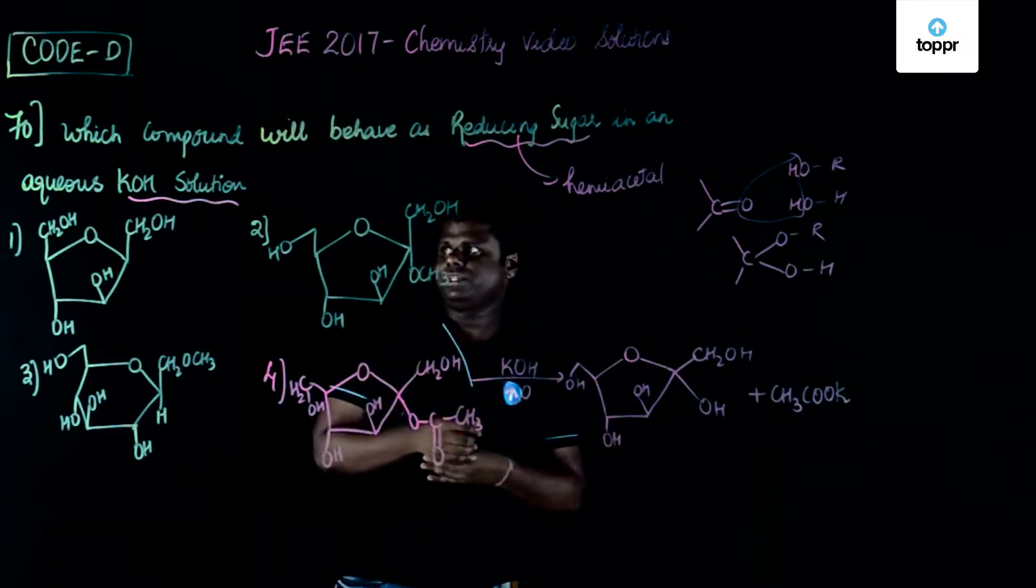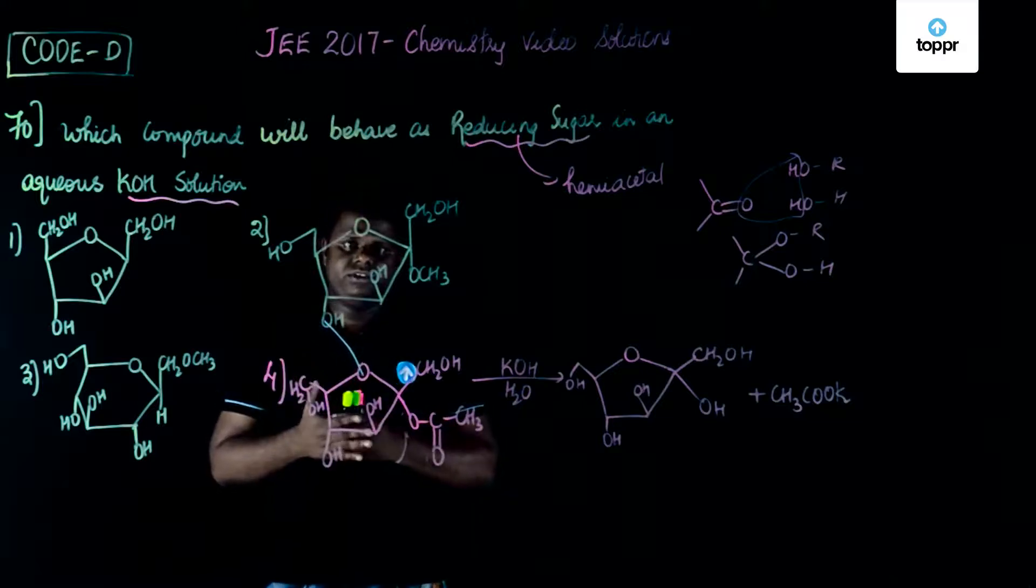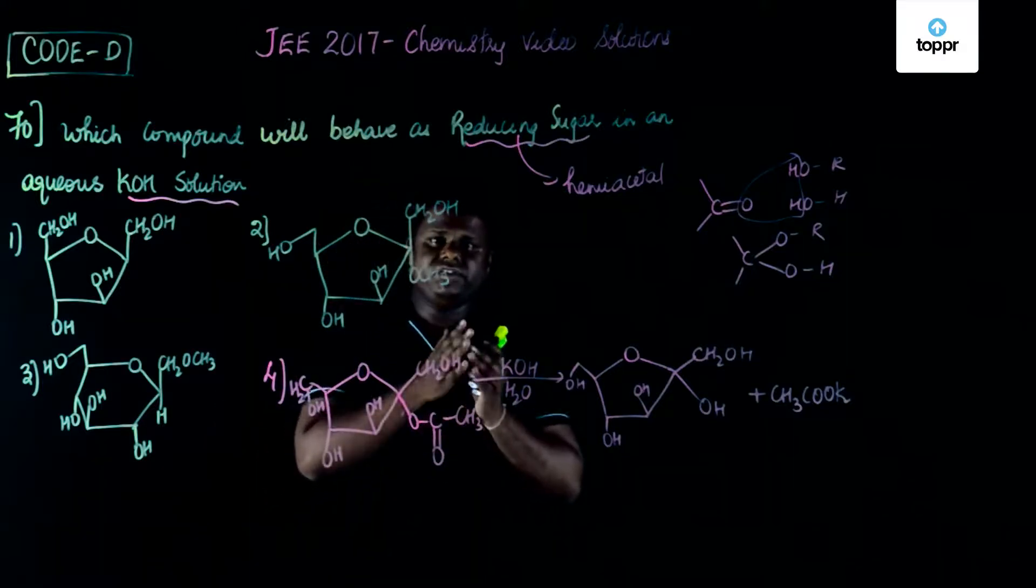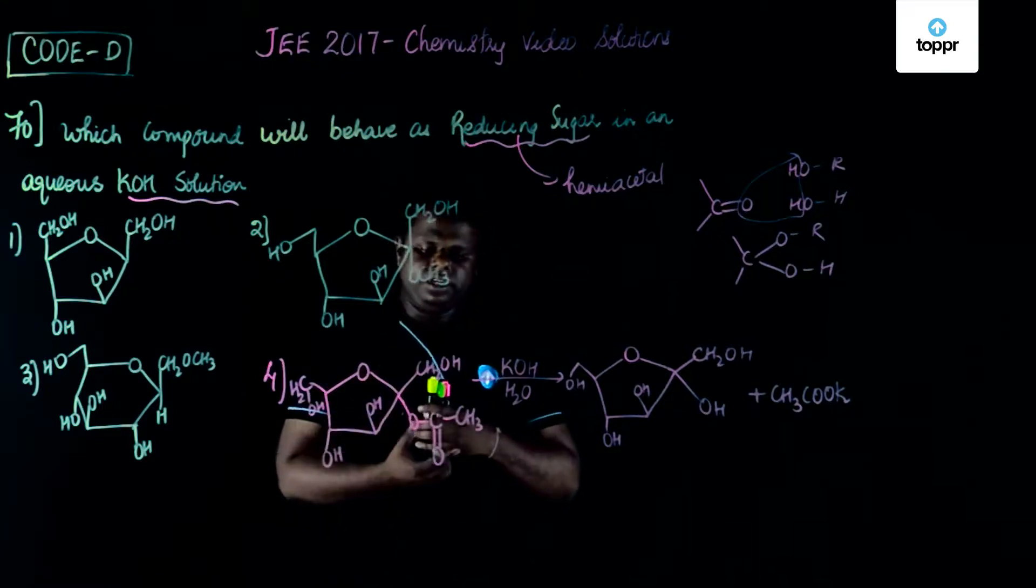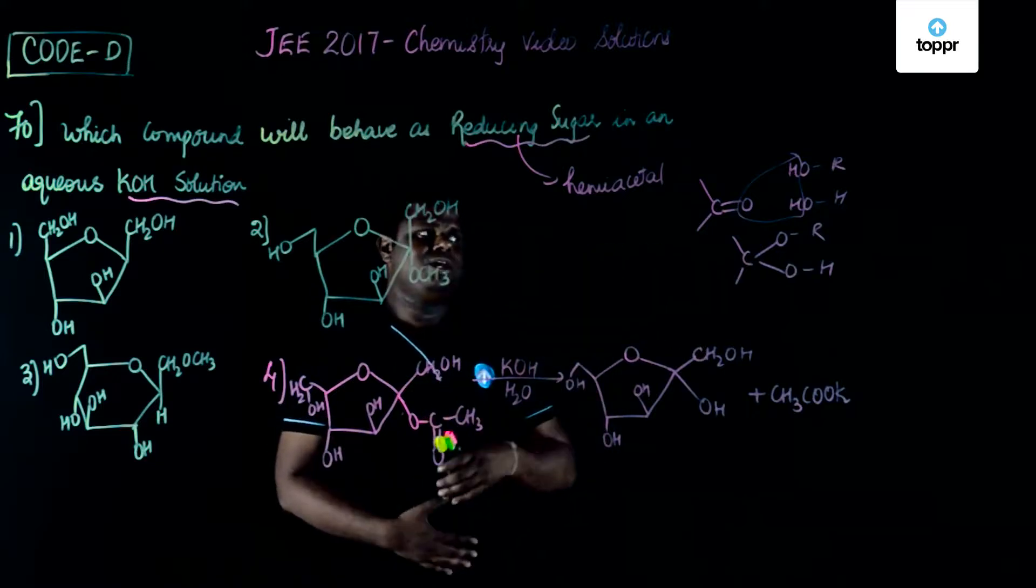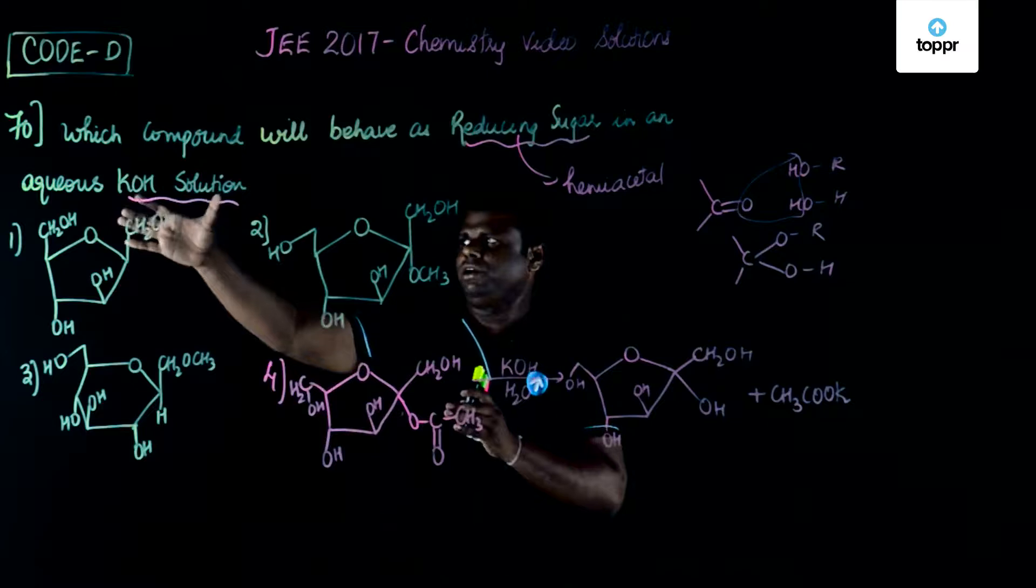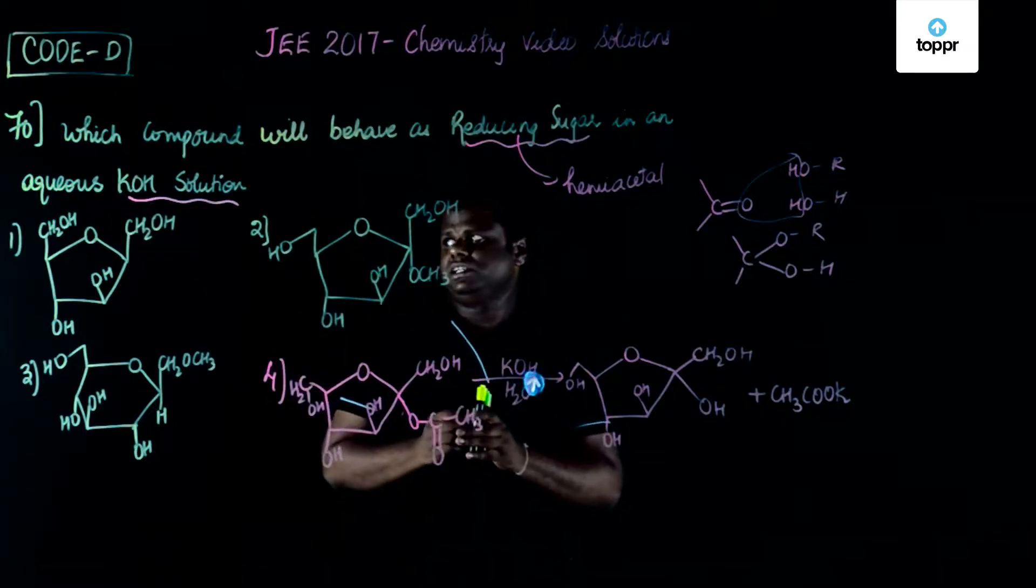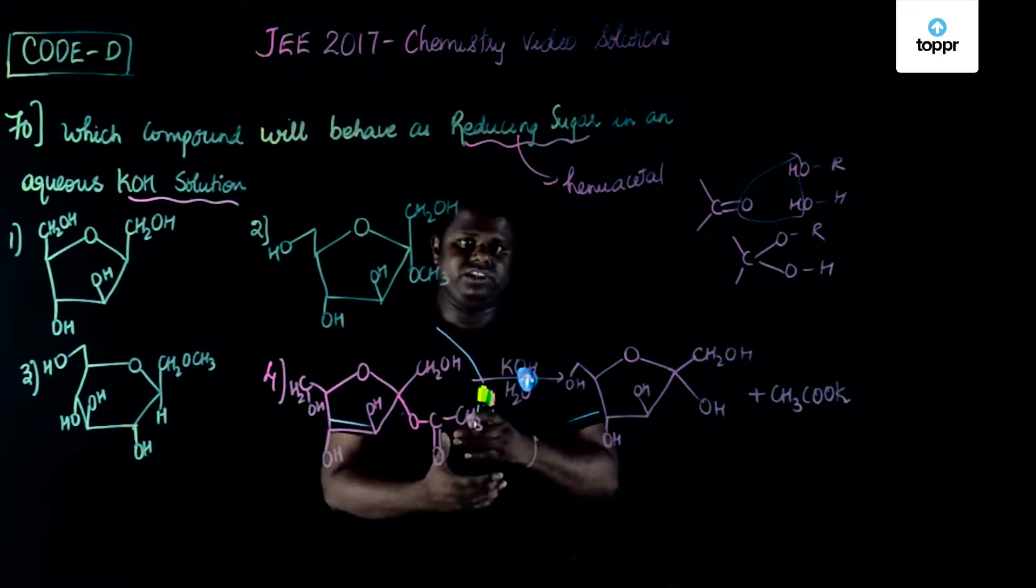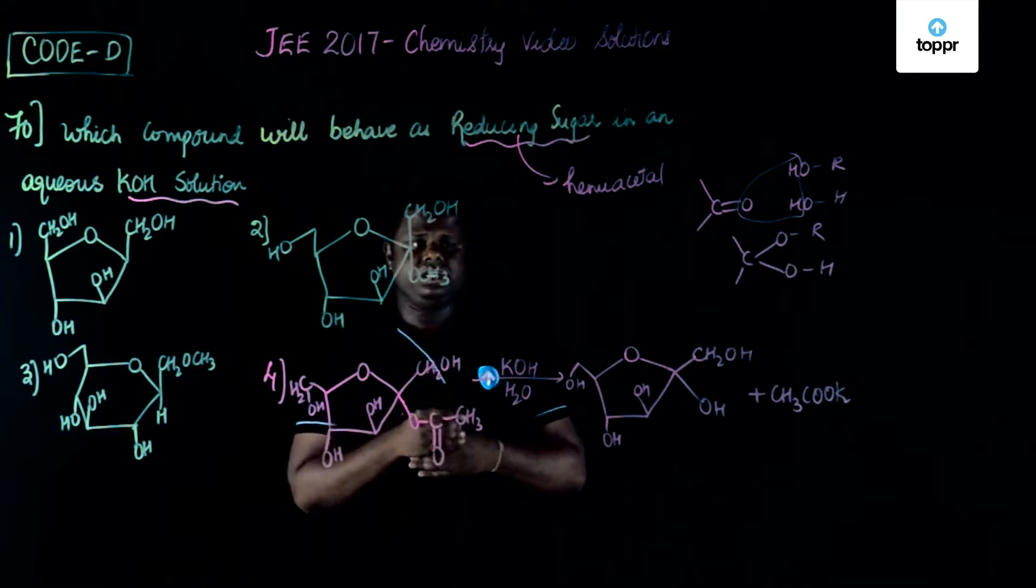The most important thing in this particular question is the use of aqueous KOH. Normally aqueous KOH is used for cleavage of an ester. Ester would hydrolyze to give corresponding alcohol and carboxylic acid. When we are talking about hemiacetal, what comes to mind is OH group. This could be one important clue - KOH may be interlinked to the ester functional group which is CH3COO.